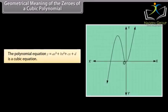Geometrical meaning of the zeros of a cubic polynomial: The polynomial equation y equal to ax cube plus bx square plus cx plus d is a cubic equation. This is the shape of the graph for a cubic polynomial.